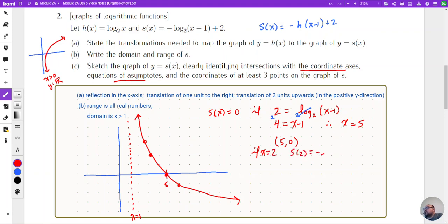s of two is going to be the negative log base two of two minus one plus two, and we know that two minus one is one and log base two of one is zero, so we know that s of two is simply going to be equal to two.